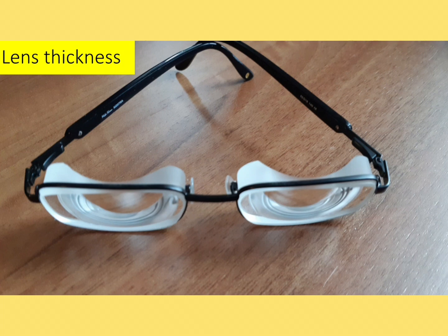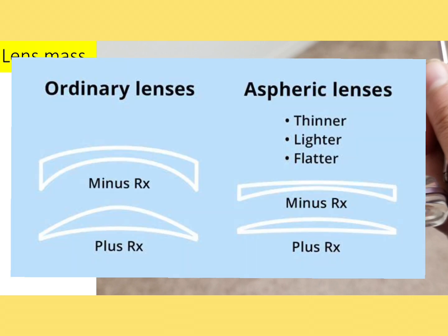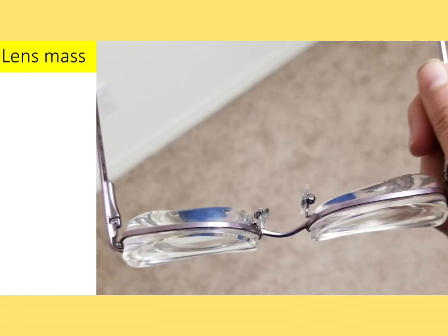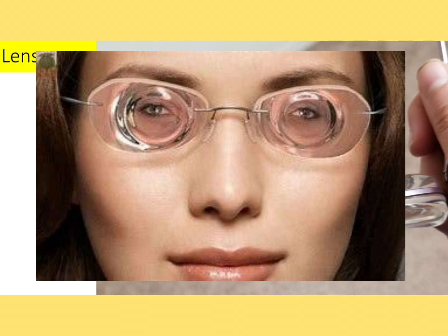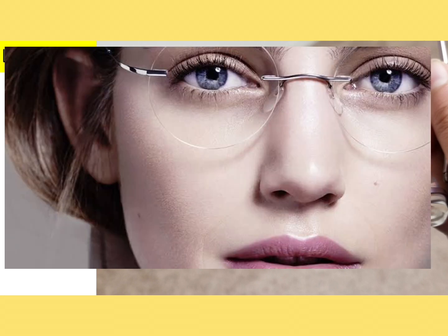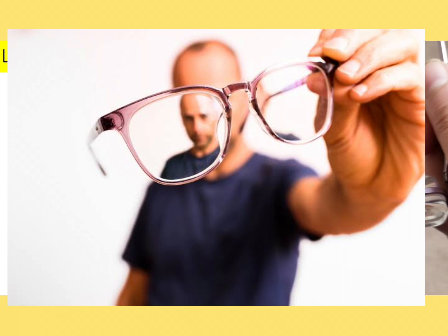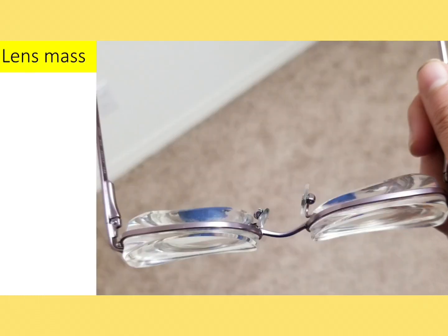Aspheric lenses are also a good choice for thinner and lighter lenses. Aspheric lenses gradually change their curvature from center to periphery — in minus lenses the aspheric lens becomes steeper in the periphery, and in plus lenses it becomes flatter, giving constant optical clarity from center to periphery. High minus lenses typically make the wearer's eyes look smaller, but aspheric lens design does not show this effect and looks natural. The best option for high minus lenses is a high index plus aspheric design combination.